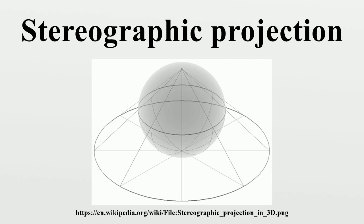In 1695, Edmund Halley, motivated by his interest in star charts, published the first mathematical proof that this map is conformal. He used the recently established tools of calculus, invented by his friend Isaac Newton.